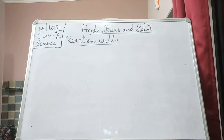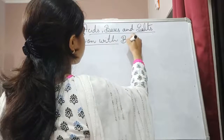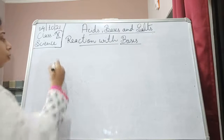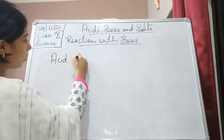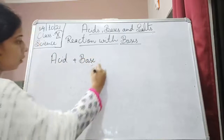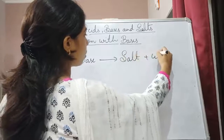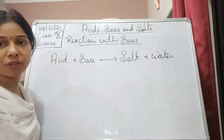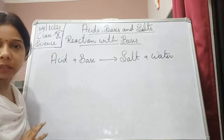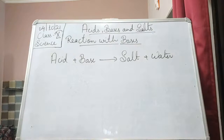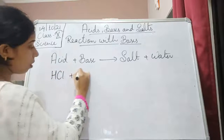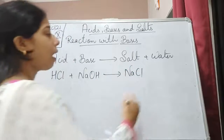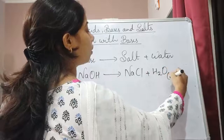Now let us see the reaction with bases — what happens when acid reacts with bases? When acid reacts with bases, there is formation of salt plus water. This reaction is called a neutralization reaction, where the acid is reacting with the base. For example, hydrochloric acid reacting with sodium hydroxide (NaOH) gives sodium chloride (NaCl) and water is also released along with it.